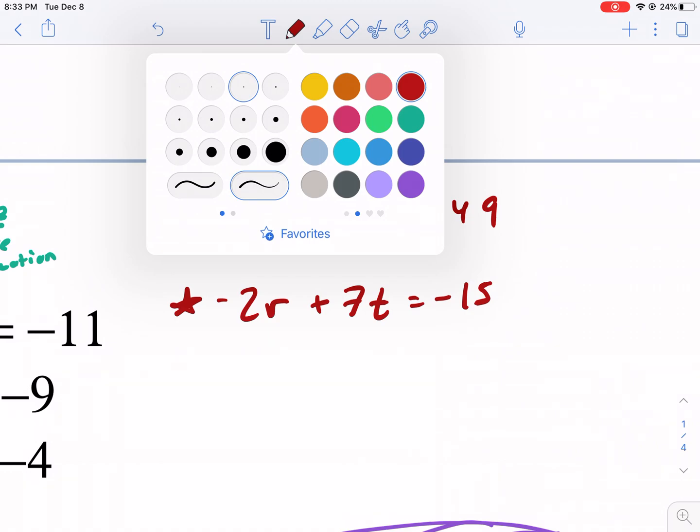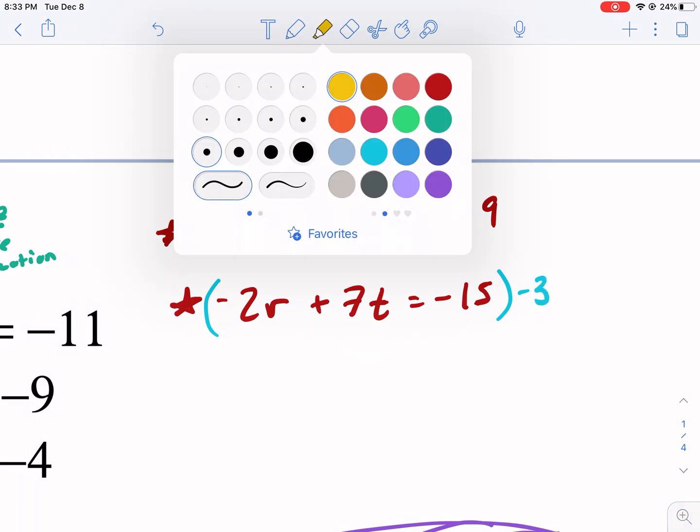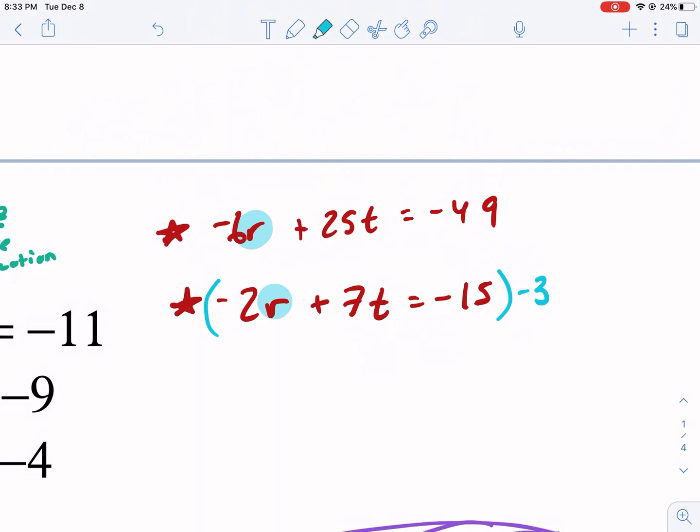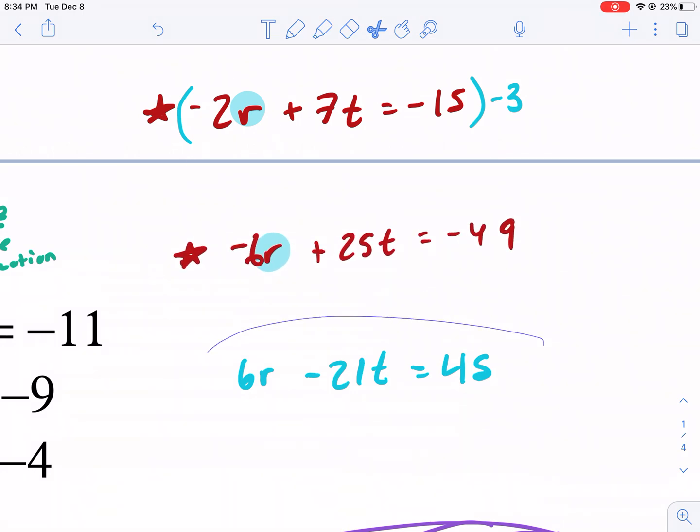I switched that there and you'll see why is because I recognize that I can multiply this by negative three and I'm going to get the R's to match up. So I kind of have my own new focus variable to eliminate the R's. So I'm going to rewrite this equation. I get positive six R minus 21 T equals positive 45. So I'm going to get rid of this guy, move him along. Okay.